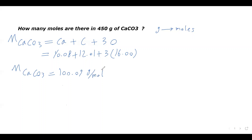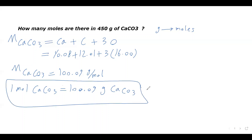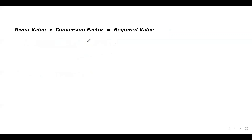So this means one mole of CaCO₃ has a mass of 100.09 grams. This is the meaning of molar mass. So let's continue solving the question. Here is the formula for the conversion factor method: given value times conversion factor equals required value.